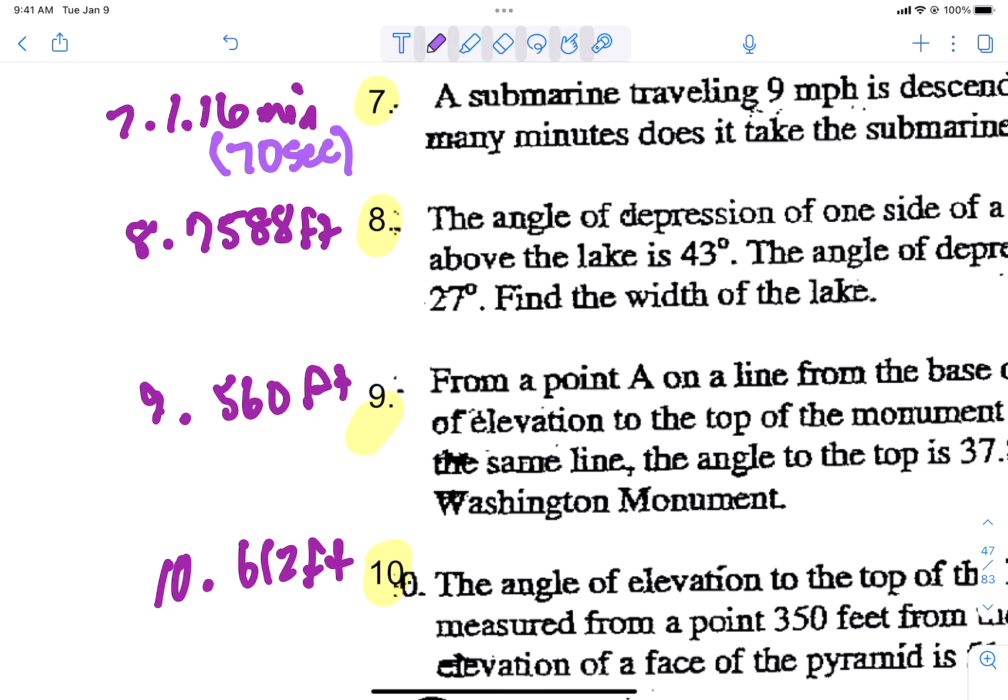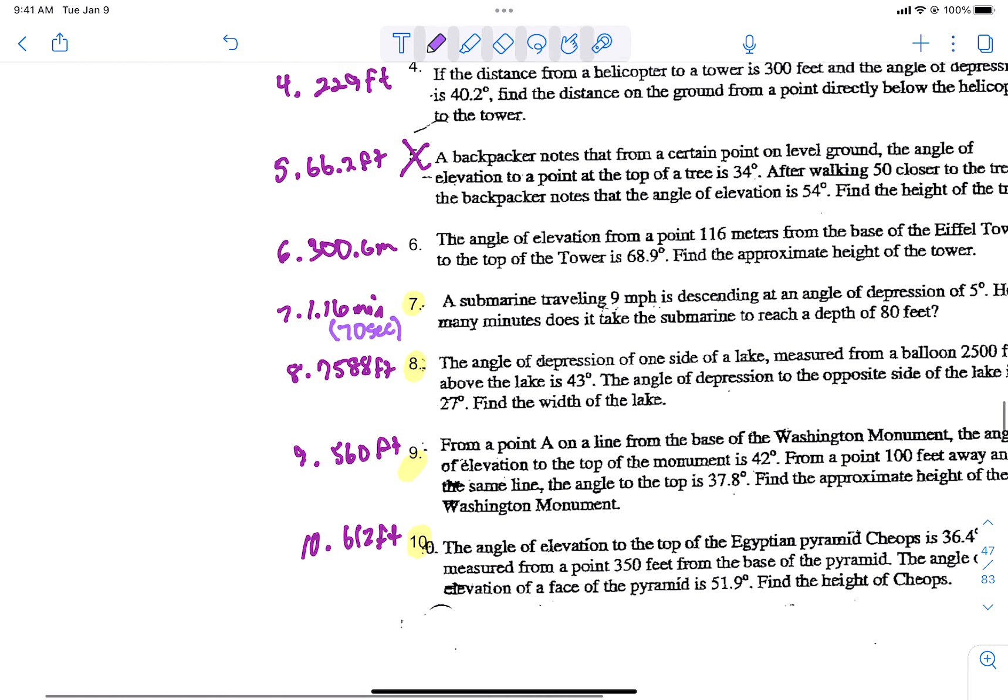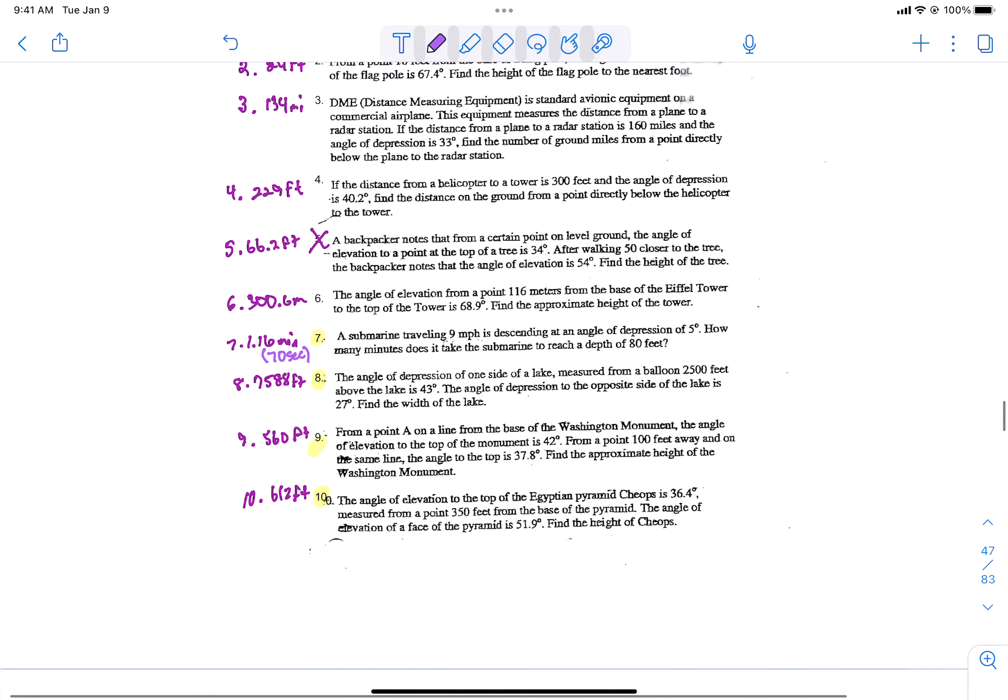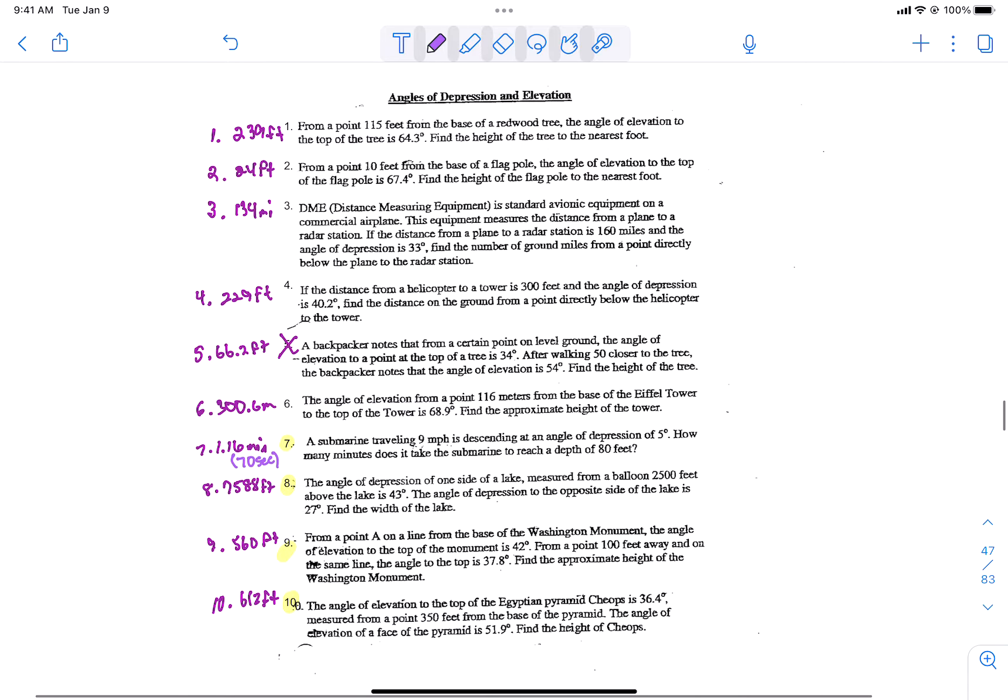So again, write down all the answers, but you're only going to get credit if you actually show all of your work. That means you're going to draw a triangle, you're going to show me the setup, and so on and so forth. You might notice that I have highlighted problems 7, 8, 9, and 10. That's because those are the most difficult.